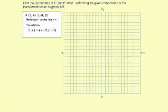So point A is 1, 4, and B is 4, 2. Let me go ahead and plot those points first, and we'll draw the segment.